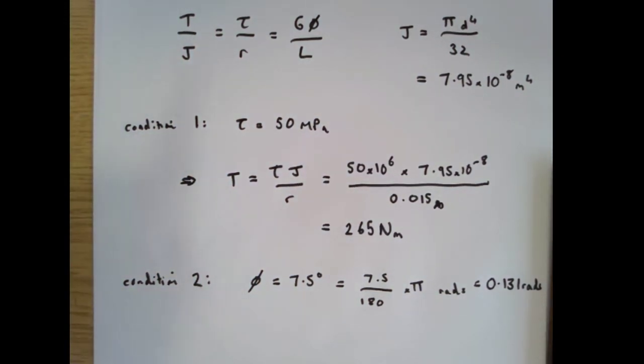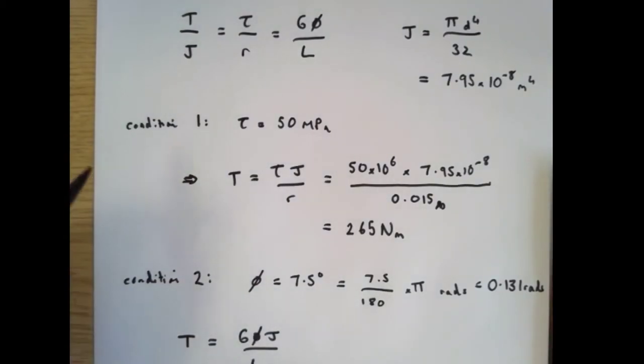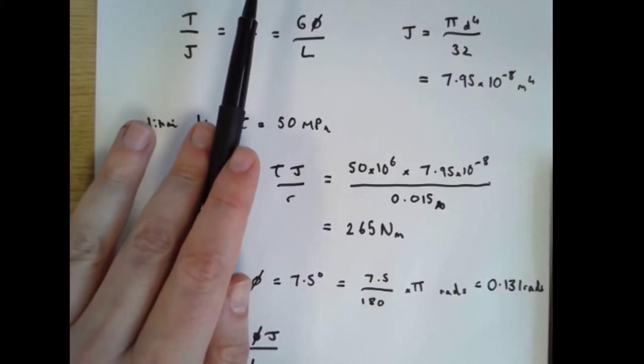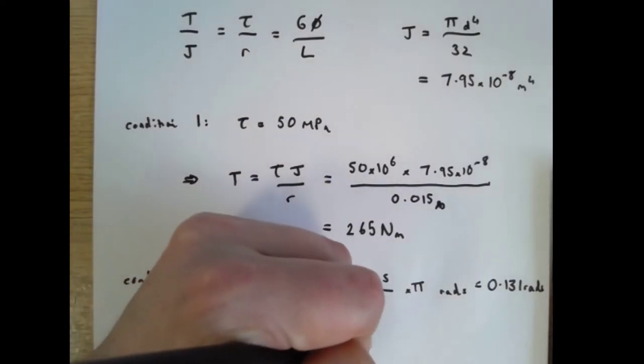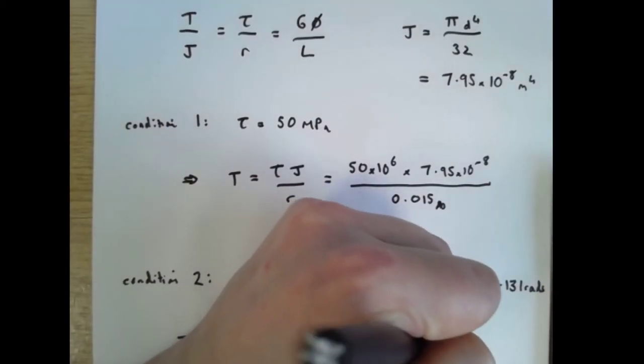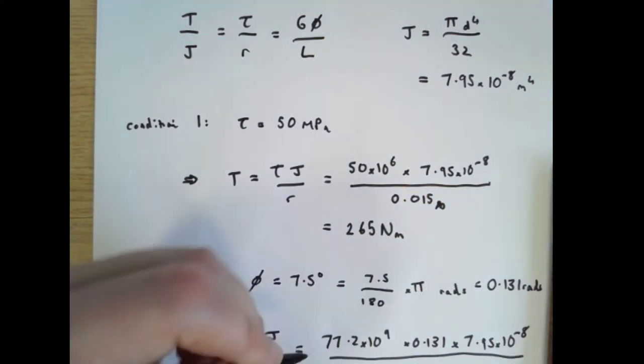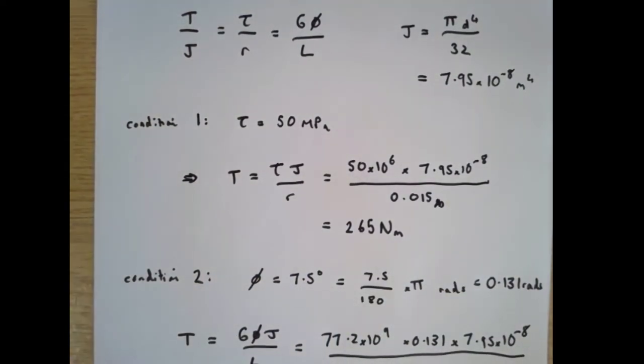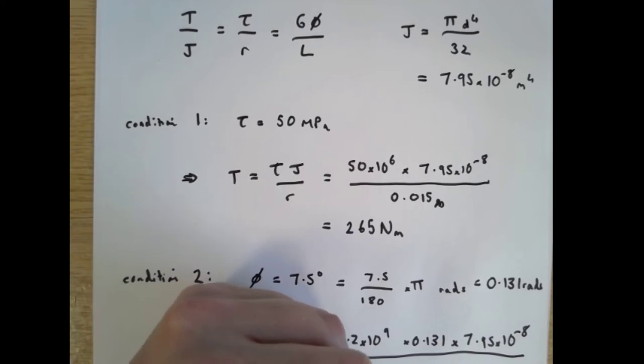That's our maximum twist angle and just remember that the twist angle in the torsion formula is given in radians. So now we can say t equals g phi j over l, ignoring the middle term in the torsion formula and rearranging for torque. Now t equals g is 77.2 times 10 to the 9, phi is 0.131, and j is 7.95 times 10 to the minus 8 all divided by l which is 2.5, and that comes out to be 321.6, I'm going to call it 322 newton meters.